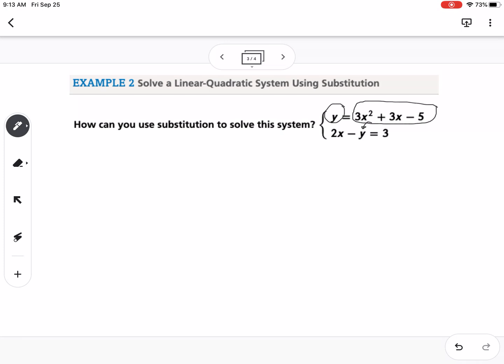So if I plug the 3x squared plus 3x minus 5 in for y, so this would be 2x minus parentheses, 3x squared plus 3x minus 5 equals 3.